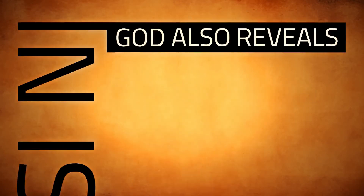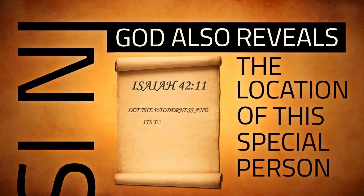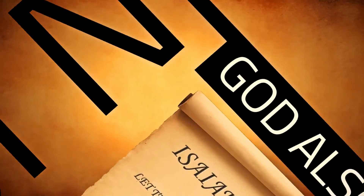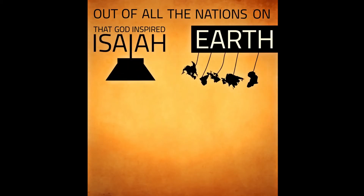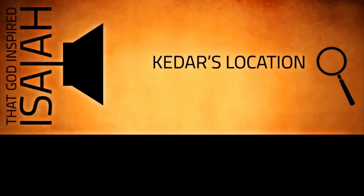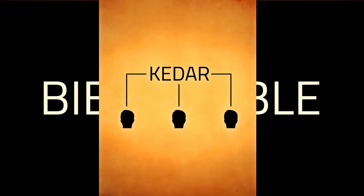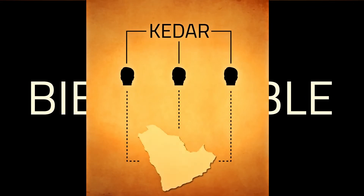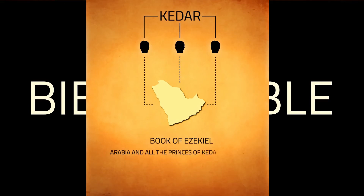In Isaiah, God also reveals the location of this special person. Out of all the nations on earth that God inspired Isaiah to mention, He chose to highlight Kedar's location, so we should pay special attention. Throughout the Bible, Kedar and his sons are linked to Arabia. For example, the book of Ezekiel tells us that Arabia and all the princes of Kedar were favorite dealers in lambs, rams, and goats.